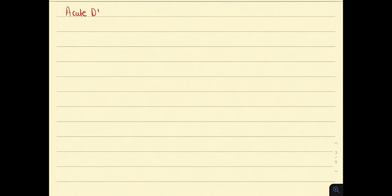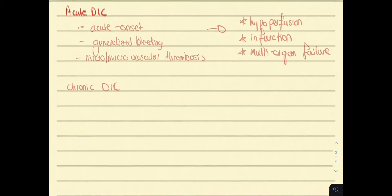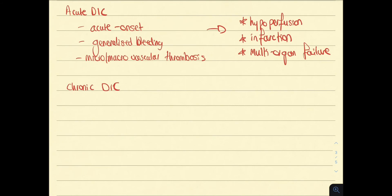DIC can be acute or chronic; most commonly it is acute. Acute DIC presents acutely with generalized bleeding and micro or macrovascular thrombus formation. This leads to hypotension, infarction, and multi-organ failure.